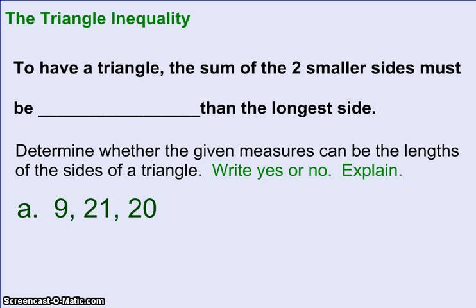Things like that. So the Triangle Inequality says, to have a triangle, the sum of the two smaller sides must be greater, or bigger if that's easier for you to think about, than the longest side.